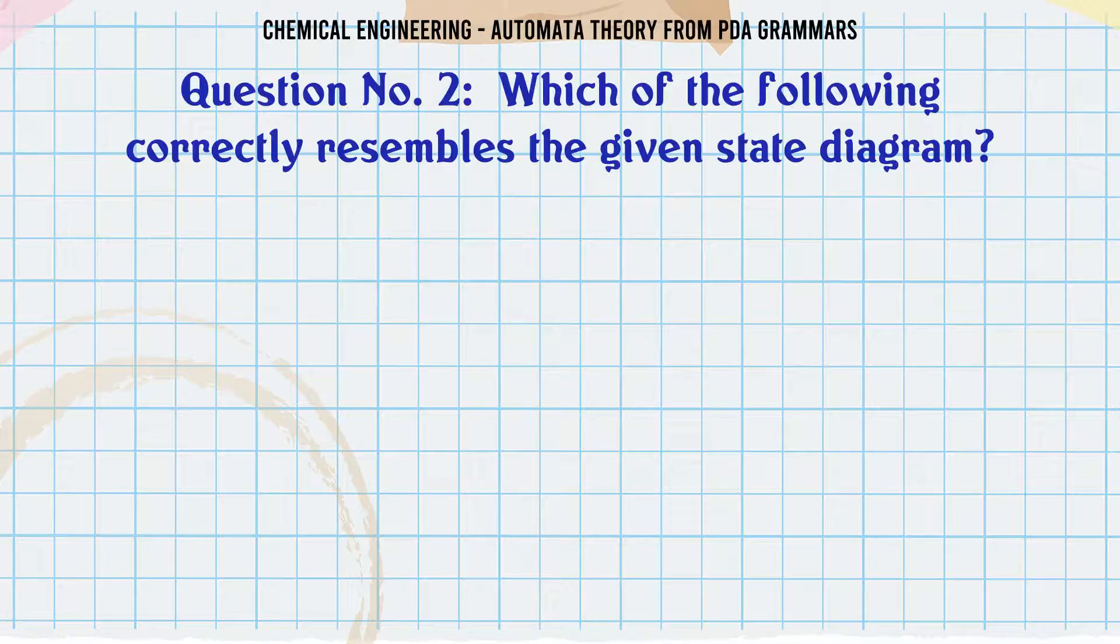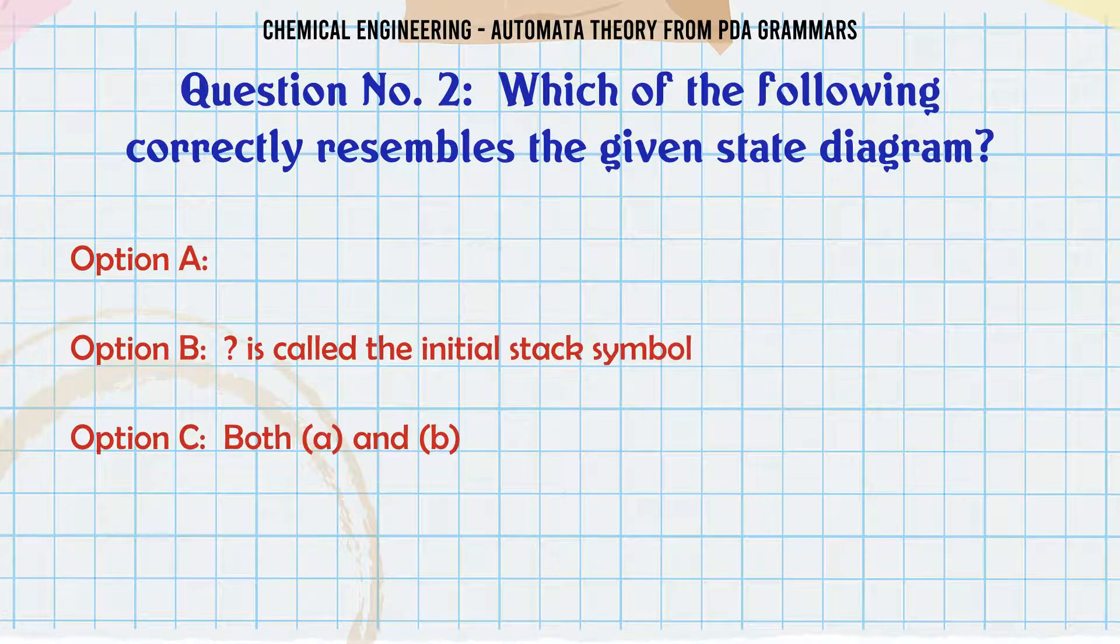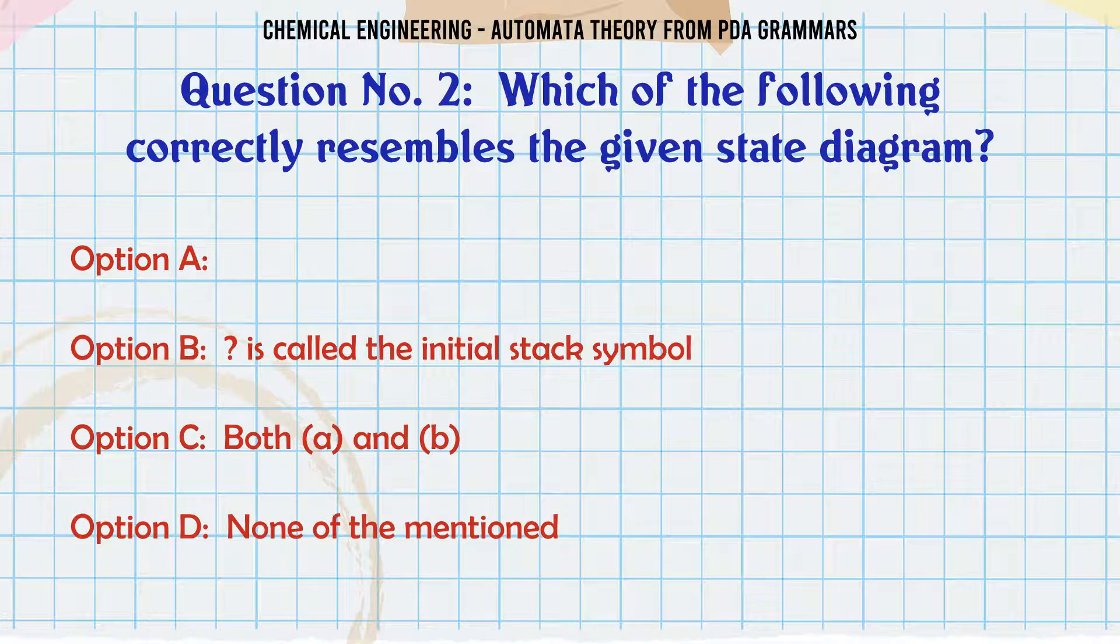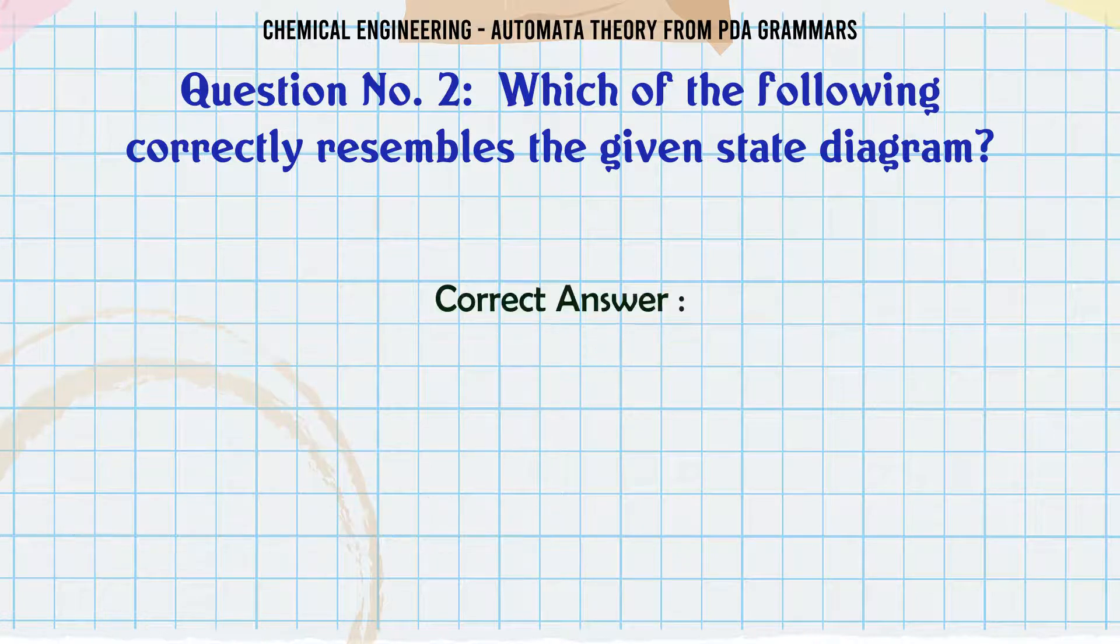Which of the following correctly resembles the given state diagram? Option A: W W R W A B. Option B: is called the initial stack symbol. Option C: Both A and B. Option D: None of the mentioned. The correct answer is W W R W A B.